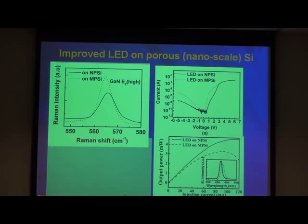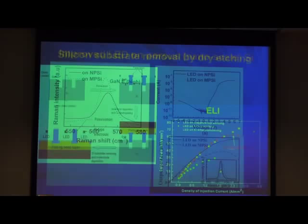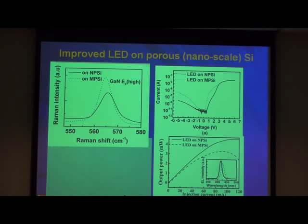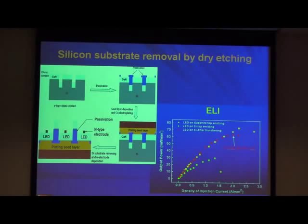A question was raised about surface passivation — no passivation was done here because we just wanted to compare the different LED growth performance. For the silicon substrate removal: we do copper plating after processing the LED, then transfer, passivation, and then transfer onto copper. We see enhancement of LED performance, but the dry etching method that the student used to remove the silicon is too expensive.